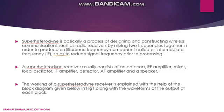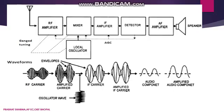As you reduce the signal frequency prior to processing, the working of the superheterodyne receiver is explained with the help of a block diagram along with the waveforms at the output of each block. The blocks are: antenna, RF amplifier, mixer, local oscillator, IF amplifier, IF amplifier, detector, AF amplifier, and speaker.